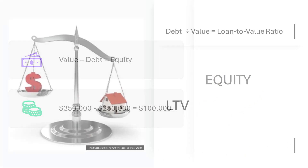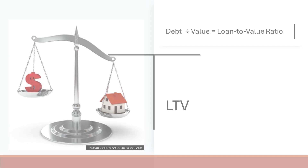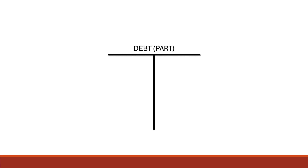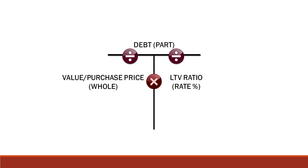Now let's get back to loan-to-value. To calculate LTV, the formula is simple: debt divided by value equals loan-to-value. We can also use the T-bar method for loan-to-value problems. In the T-bar, the part on top is the debt, the whole is the purchase price, and the percentage is the loan-to-value ratio. The horizontal bar means divide and the vertical bar means multiply. If you're given any two out of three variables, you can easily solve for the third by plugging in the known values.